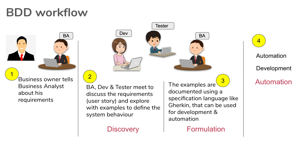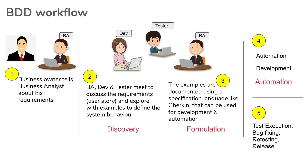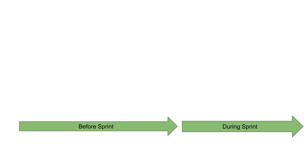Then we move to the phase of automation, where automation test cases are created using the specifications or scenarios and documented examples created earlier. The development of code also takes place here. After automation tests are created and development is done, we have a test execution phase. If there are any defects or bugs, they are fixed, and retesting and regression is done. Finally, the features or product is released. This is how a typical BDD workflow looks like.